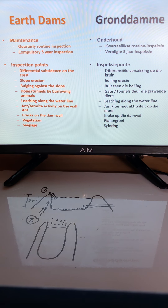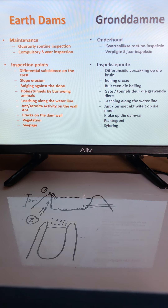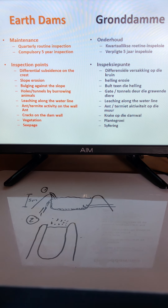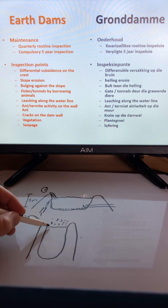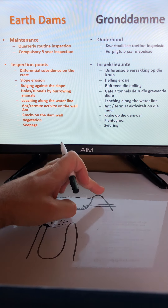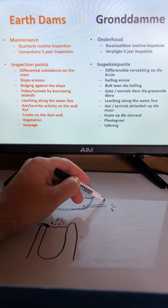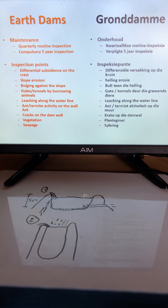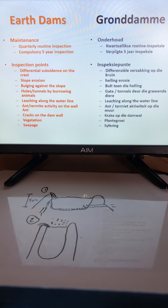During inspections, they check for differential subsidence on the crest — it can shrink by no more than one percent — as well as slope erosion, which can cause the dam wall to collapse. Bulging against the slope is also a warning sign of imminent dam wall failure.